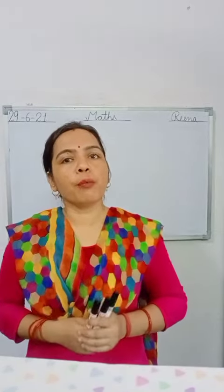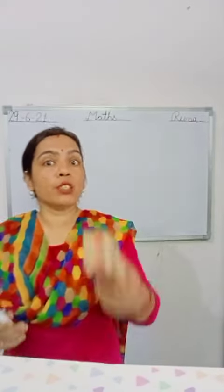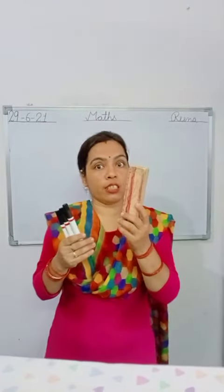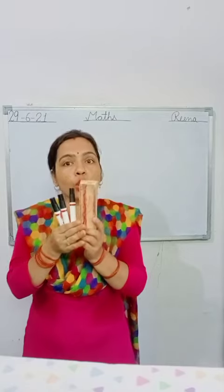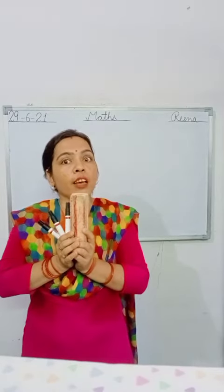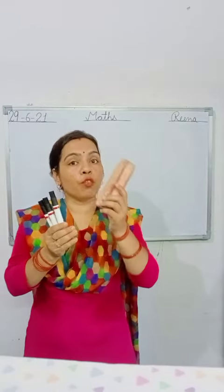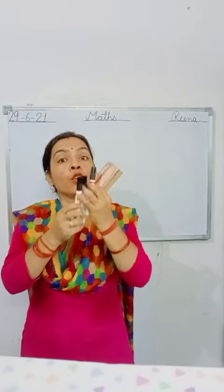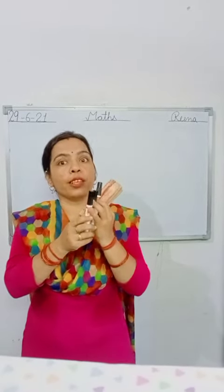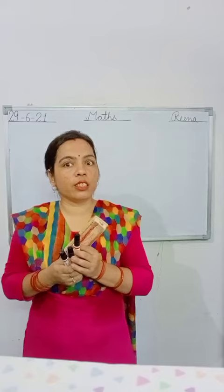My friend gave me one object — that means one duster. Is it clear? Then how many total objects do I have? I have one, two, three, four objects. How many objects? Four objects.